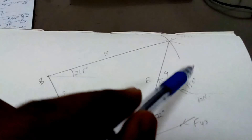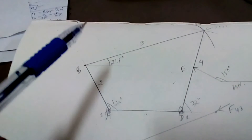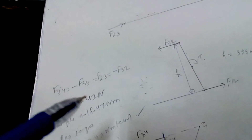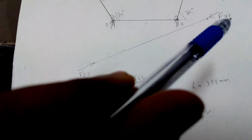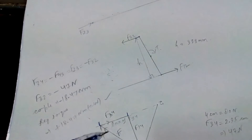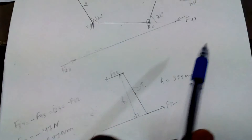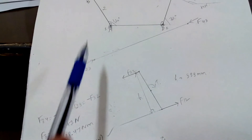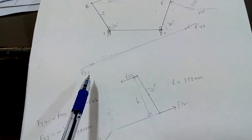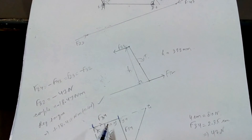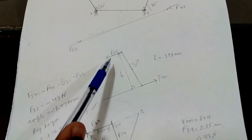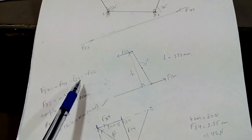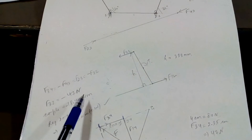Since F34 and F43 are equal in magnitude but opposite in direction, and these forces lie on the same line, we can write: F34 = −F43 = F23 = −F32. We found F34 in a specific direction, so F43 is opposite; from link 2 to 3 it acts in this direction, meaning F23 and F34 are equal in magnitude and direction, while F32 is opposite to F23. Therefore F32 equals −47 Newton.